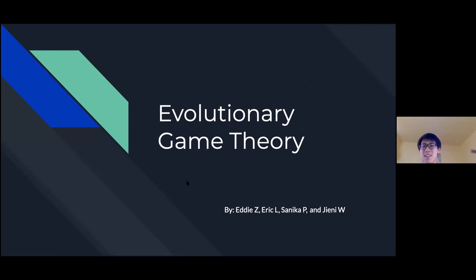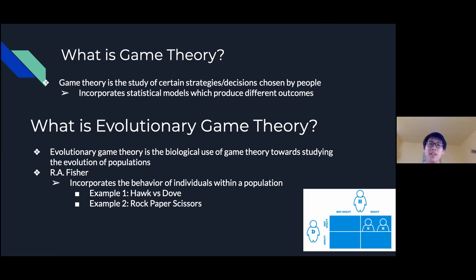My name is Eddie Zhang and I'm here with Eric Biasanaka Patil and Johnny Wu and today we'll be presenting to you evolutionary game theory. Game theory is the study of certain strategies and decisions chosen by people and it incorporates statistical models which produce different outcomes. Evolutionary game theory is based off game theory and it is the use of game theory biologically towards studying the evolution of different populations and looking at behavior of individuals within the population. It was introduced by R.A. Fisher and today I will be talking about two different examples of evolutionary game theory which is hawk versus dove and rock, paper, scissors.